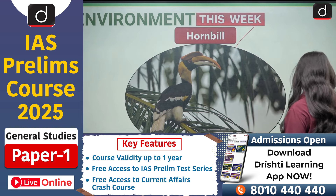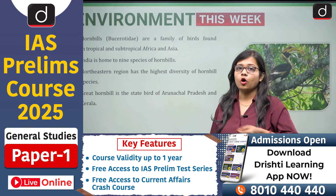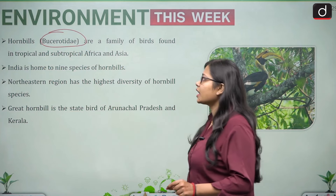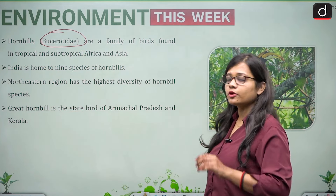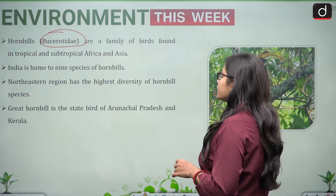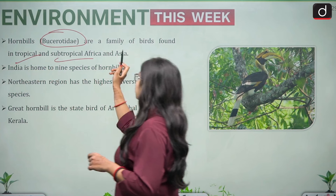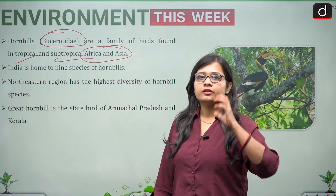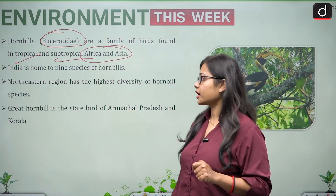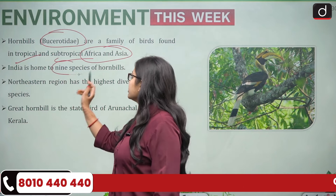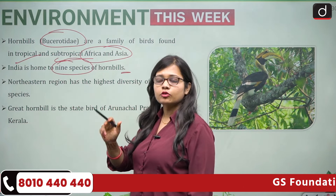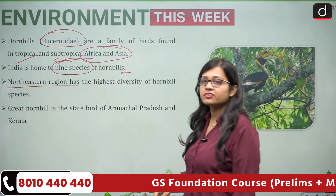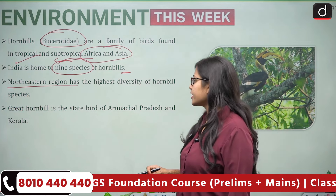The first topic is hornbill. The family that hornbill belongs to is Bucerotidae. Hornbills are a family of birds found in tropical and subtropical Africa and Asia. India is home to nine species of hornbill, and the northeastern region has the highest diversity of hornbills in India.